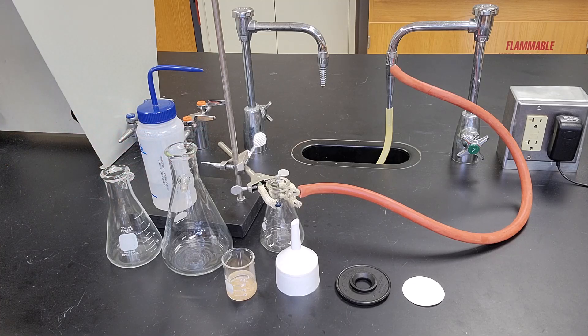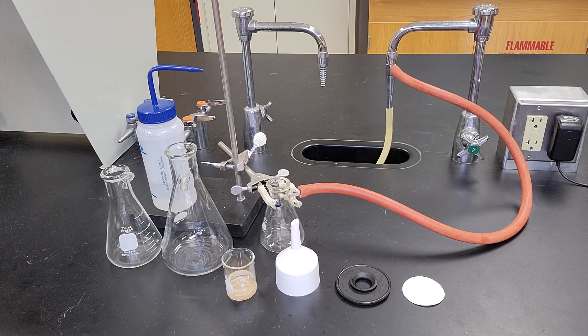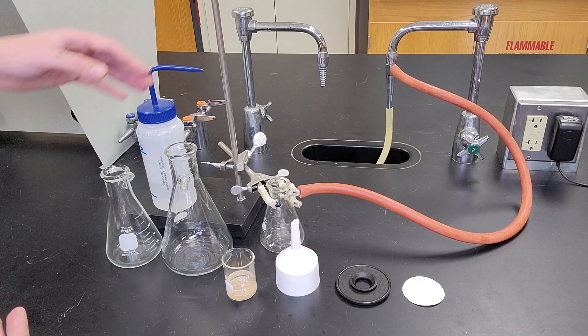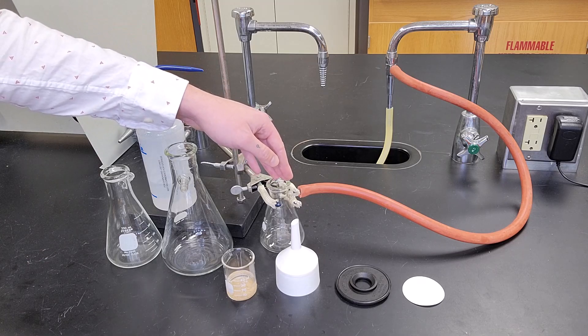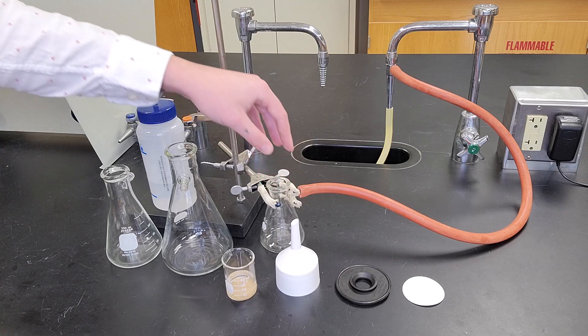You would choose the sidearm flask that corresponds to the volume of liquid you're expecting to drain through. So if you're expecting maybe 50 mils of liquid to come through your filter, you might want to choose the smaller one.